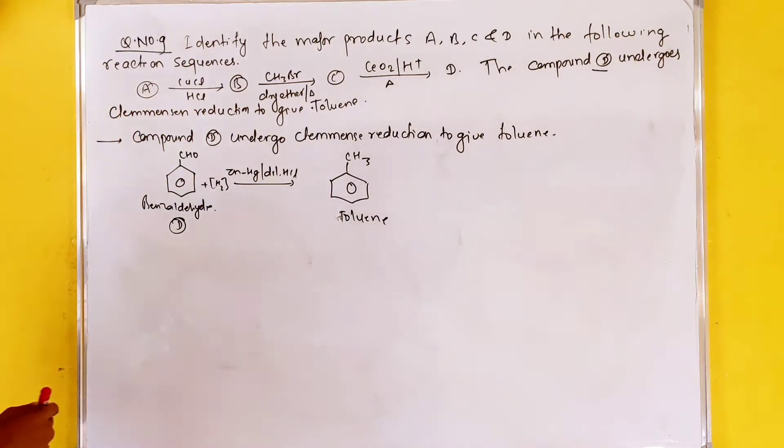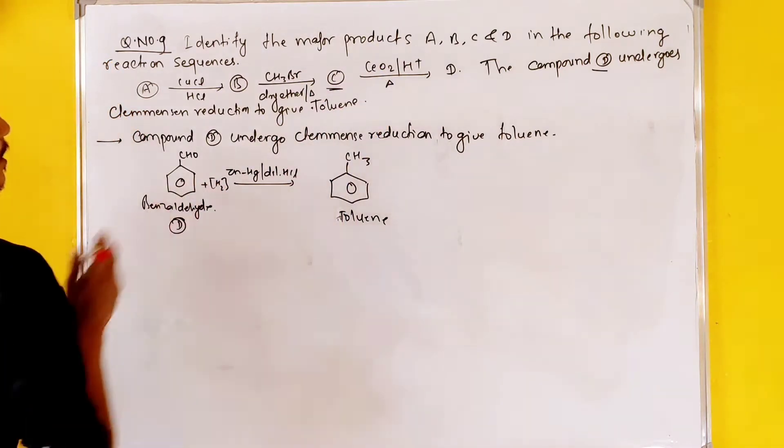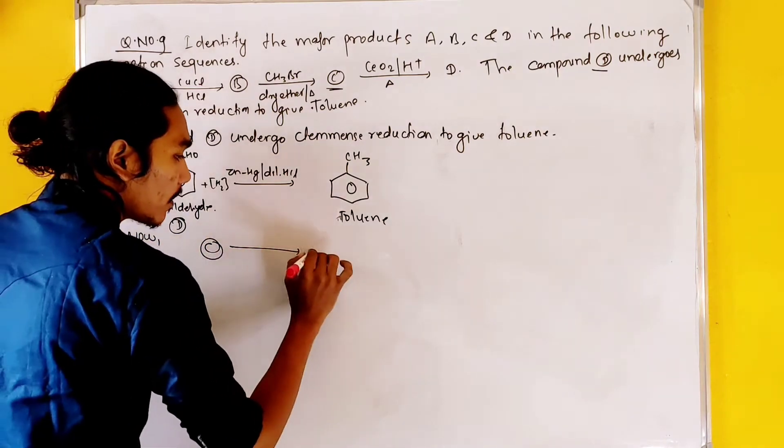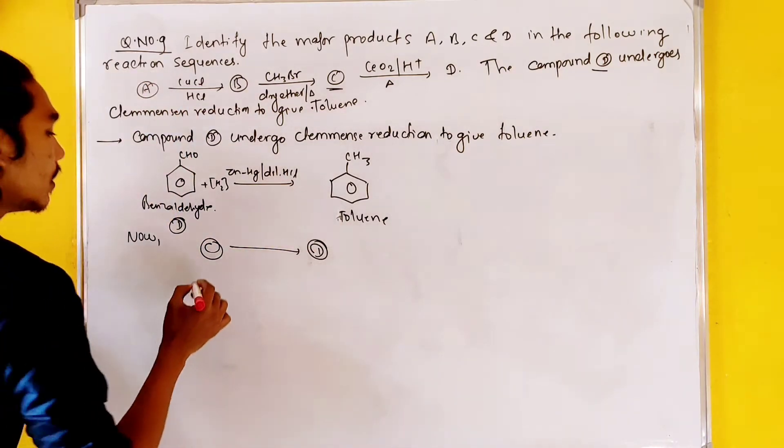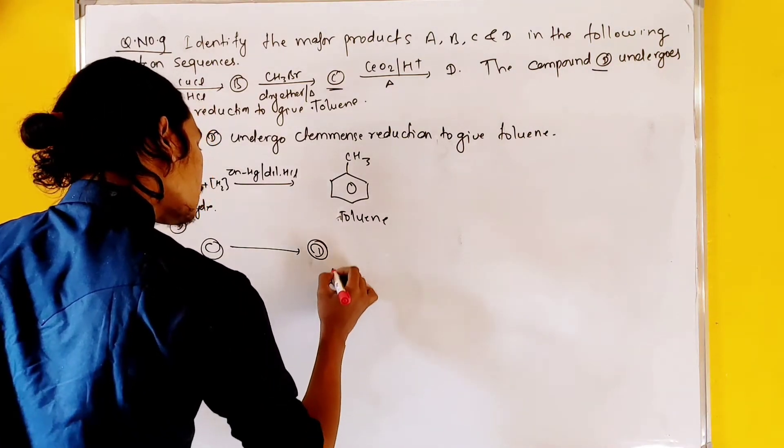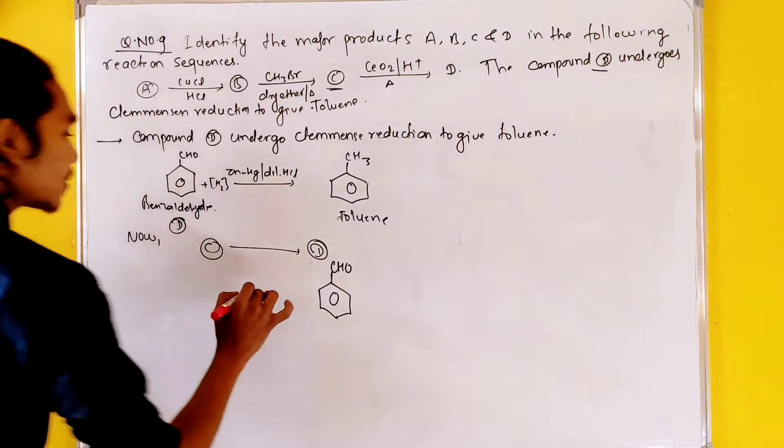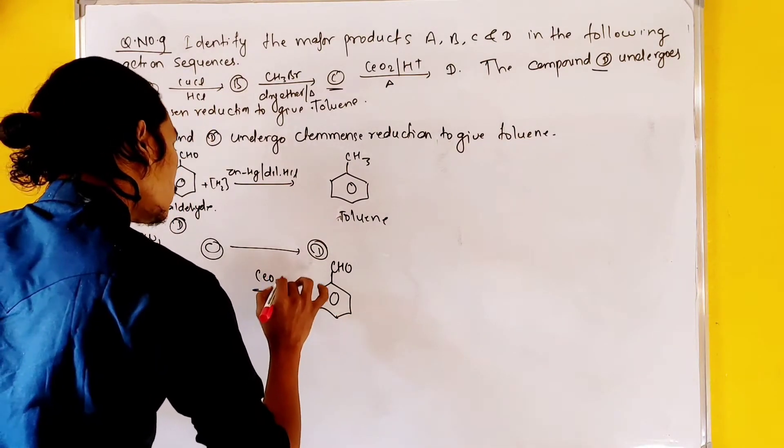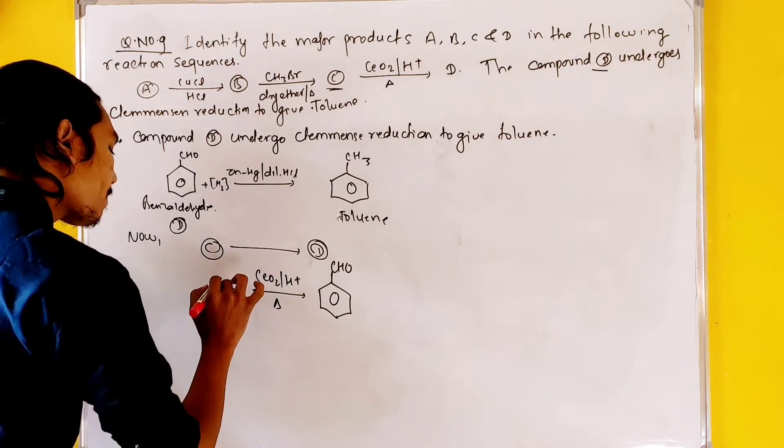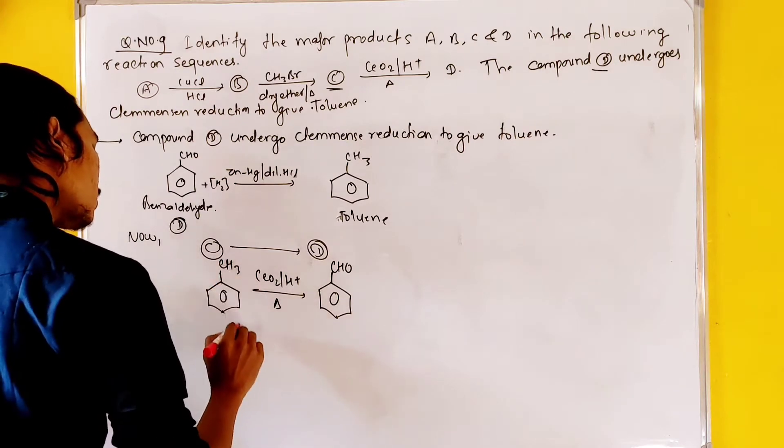When we can see C, we can see oxidation, this is reduction. Now, this sequence of reactions, C formation, we can see acetaldehyde production. Toluene oxidation, we can see O2 H plus light and heat. We can see formation.